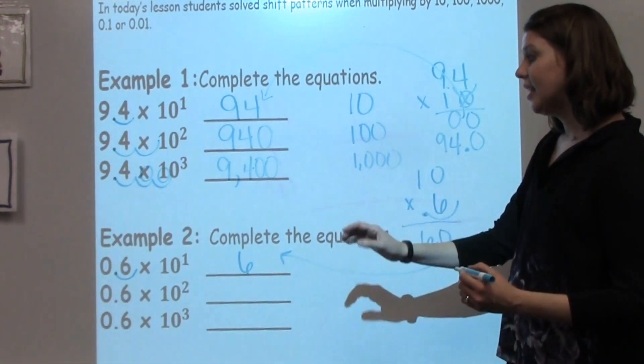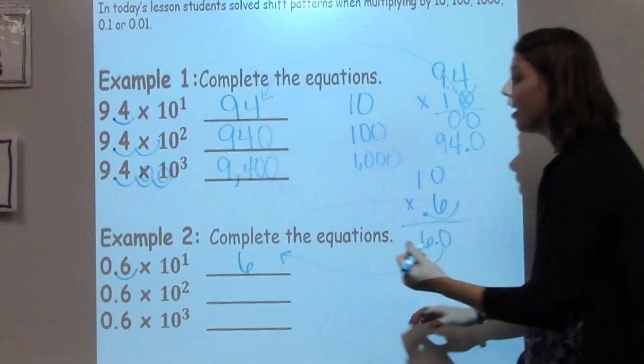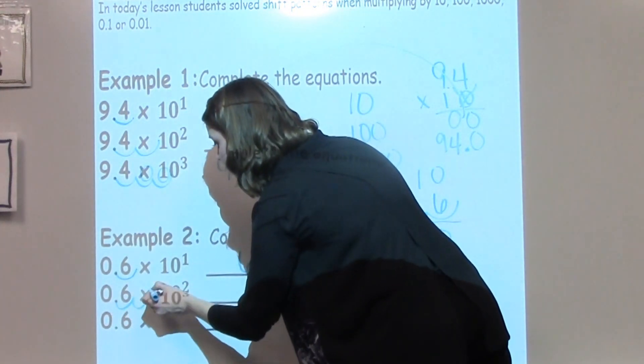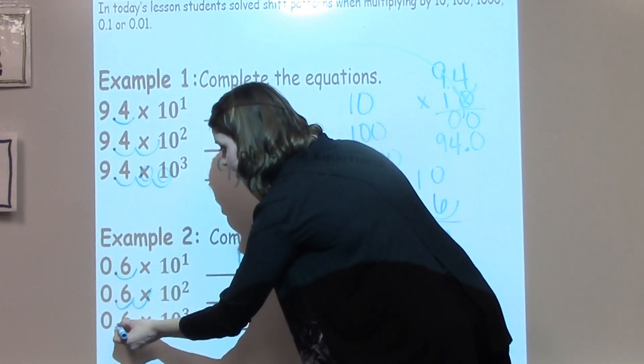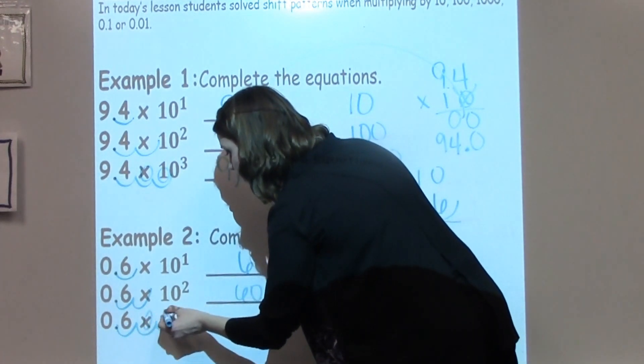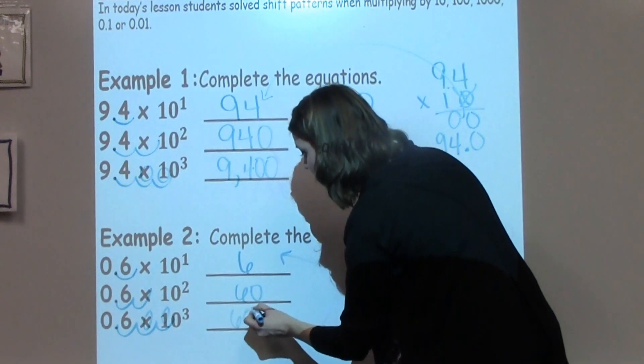Now that I've got 0.6 times 10 to the second power, I know I'm going to take 2 shifts, 1, 2, for an answer of 60, and then 0.6 times 10 to the third power for 1, 2, 3 hops for an answer of 600.